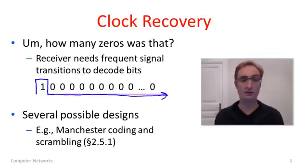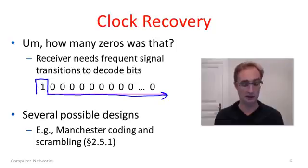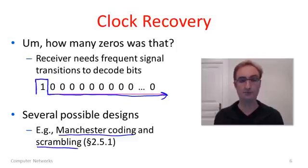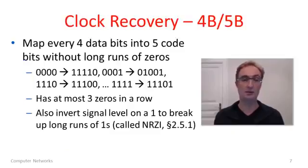Instead, what you would really like are frequent transitions in the signal itself, so that you could help work out the timing of the signal at the receiver. There are several different ways to go about this. In your text you can look at something called Manchester coding — a coding where there is a transition built into every signal, either a 0 or 1. Another approach is something called scrambling, where you exclusive-or your data with a pseudo-random signal, which makes it highly likely that you'll get transitions. What I'm going to tell you about is one form of modulation used to help with clock recovery, called 4B5B.